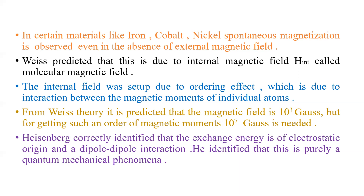Heisenberg correctly identified that this theory was wrong in that context. He correctly identified that the exchange energy is of electrostatic origin and dipole-dipole interaction, and that this is responsible for spontaneous magnetization. He identified the exchange energy as the energy responsible for spontaneous magnetization, and it is of electrostatic origin and a purely quantum mechanical phenomenon.